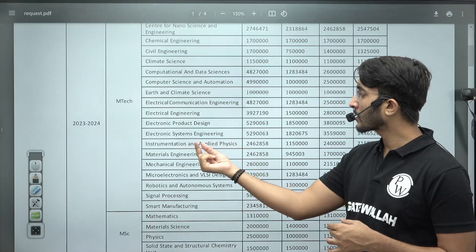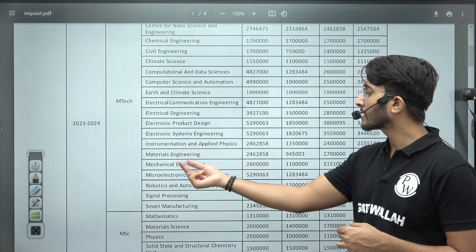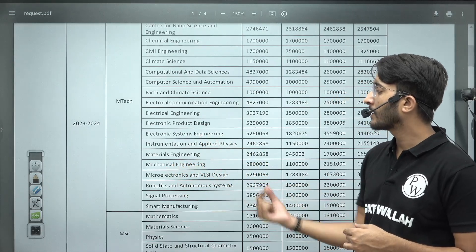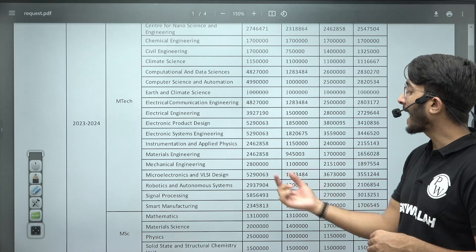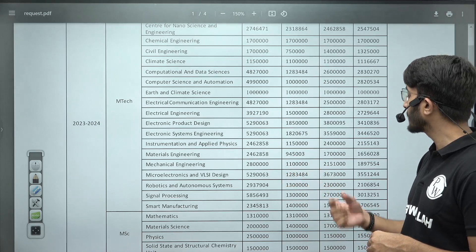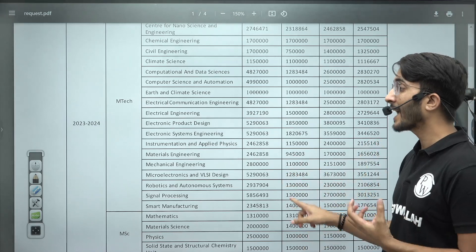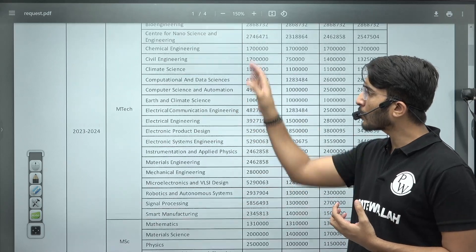And similarly for VLSI, you can observe it's also a high paying M.Tech course. Like Microelectronics and VLSI, 52 lakh 90,000 something maximum CTC, 12 lakh something minimum CTC, and 35 lakh something average CTC provided.